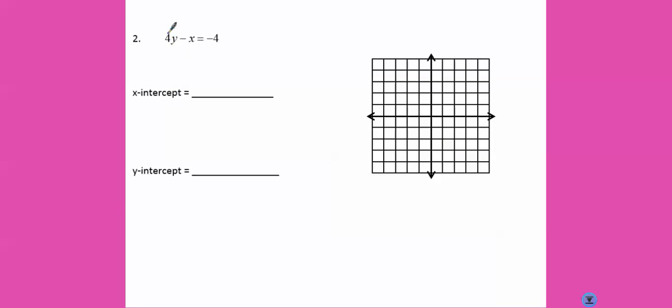So let's look at another one. We're going to ignore the y part to find the x intercept. So we have negative x equals negative 4. Divide both sides by negative 1. And we get that x equals 4.